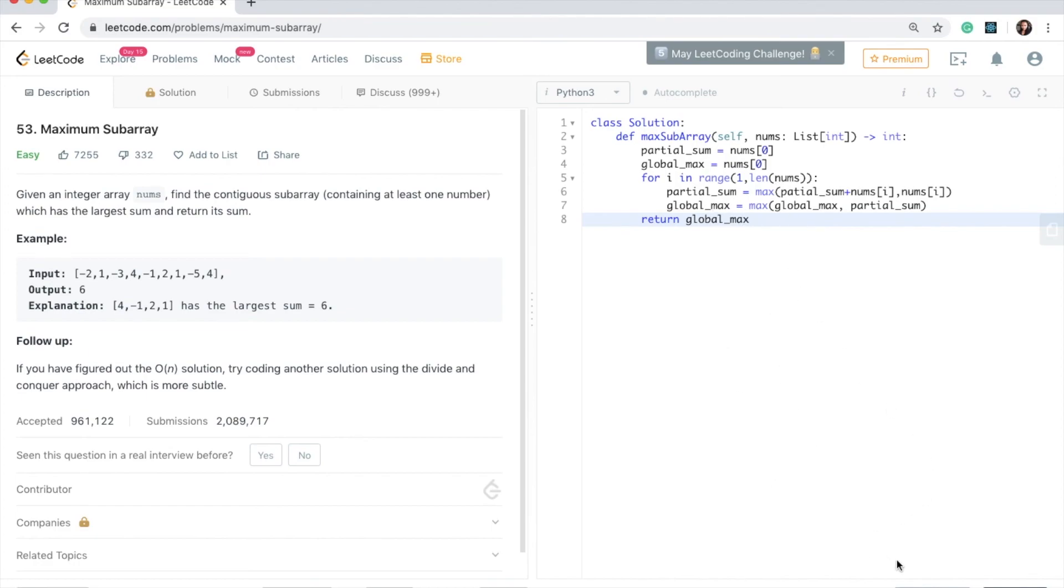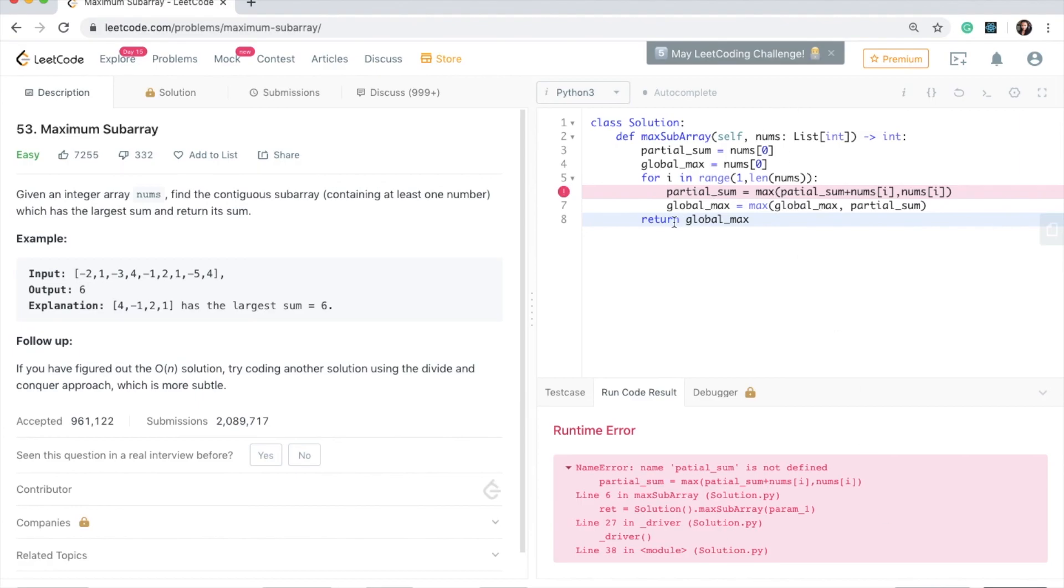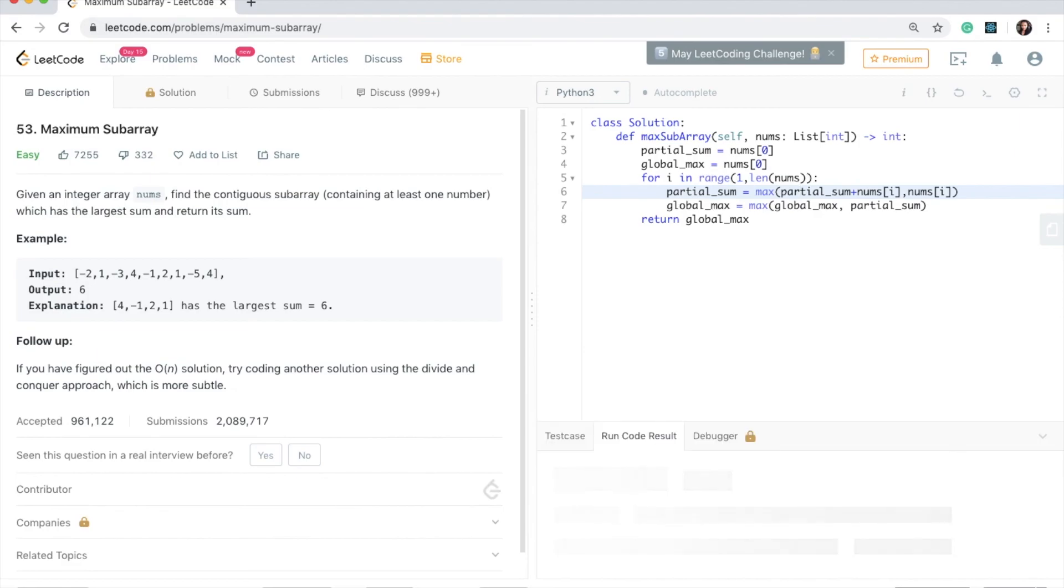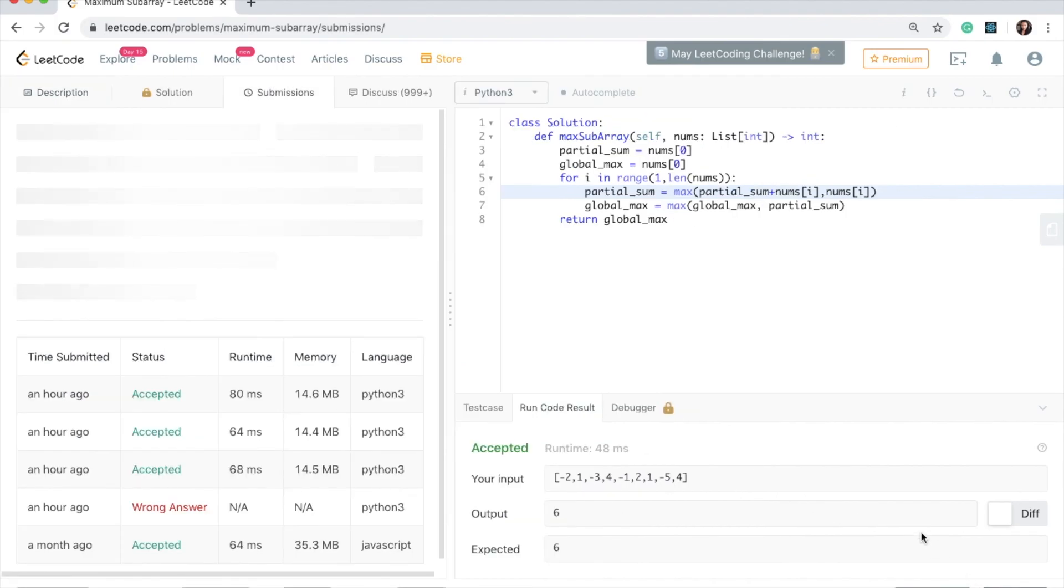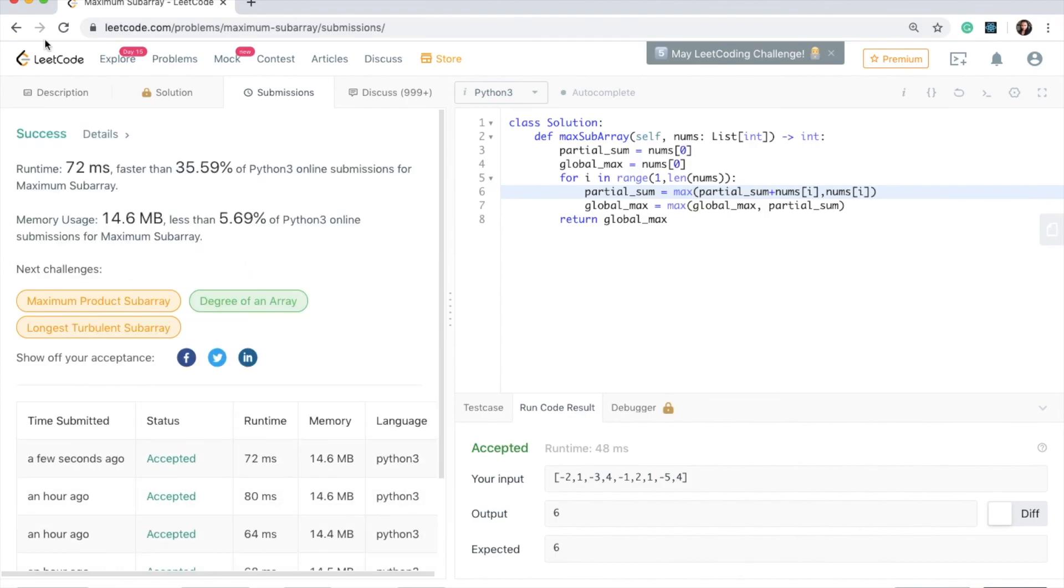Okay, so let's give this a run. Okay, I made a typo here. Partial sum. Okay. Okay, awesome. Accepted. So let's go ahead and submit this. Great success.